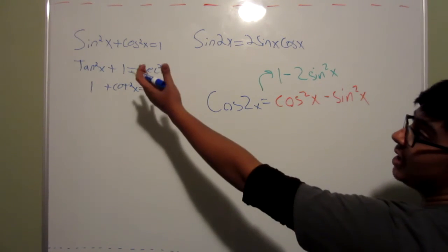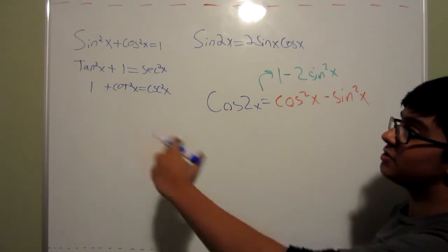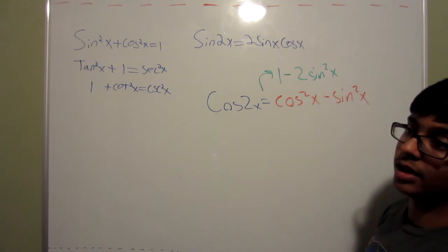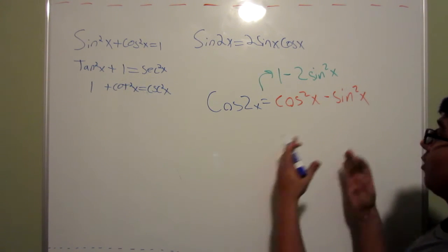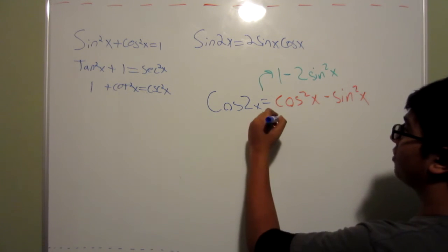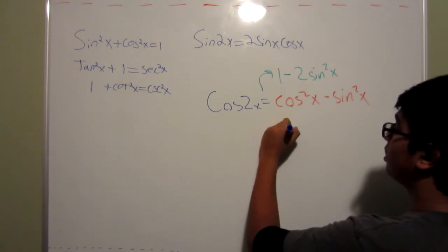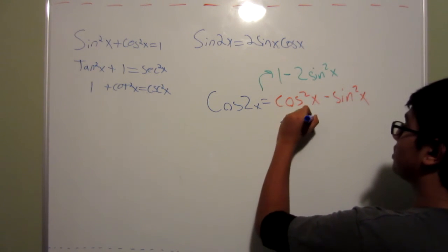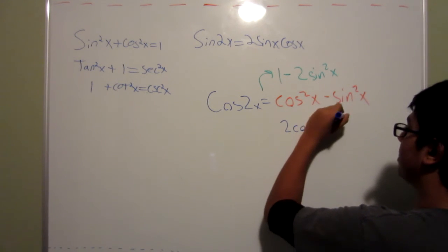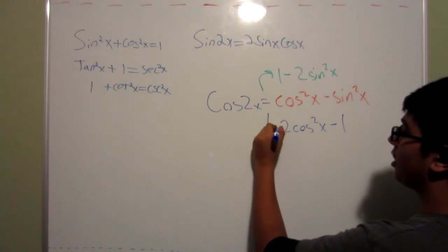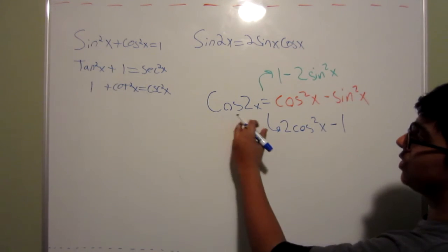So, if you put the sine squared x over here by itself, you'll get 1 minus cosine squared x. Take that and replace the sine squared x over here, and you'll get the formula of 2 cosine squared x minus 1. And that is the third formula for cosine 2x.